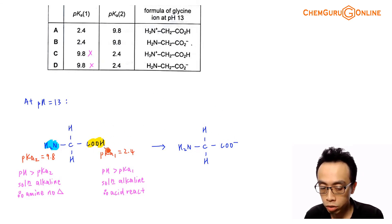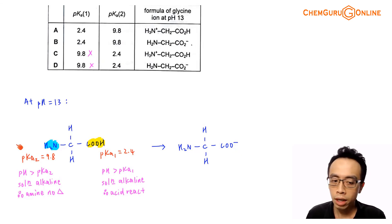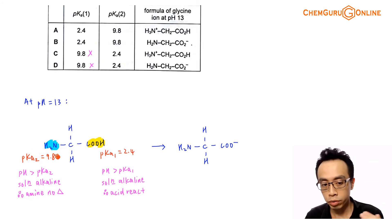Now if I consider my alpha amino group, the alpha amino group pKa value is 9.8. If you put this amino acid into a solution where the pH equals 13, again we have to compare pH of the solution against the pKa value for your functional group. So pH 13 is greater than pKa2. The solution is alkaline with respect to your amine.